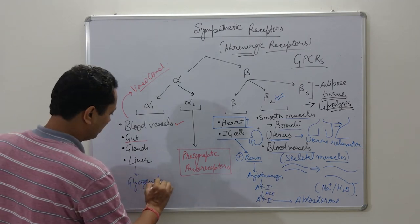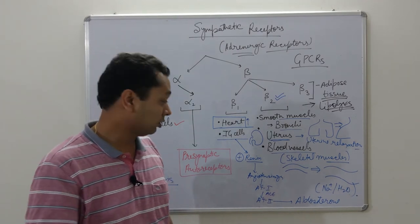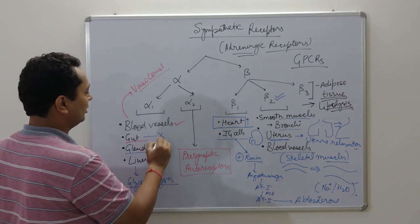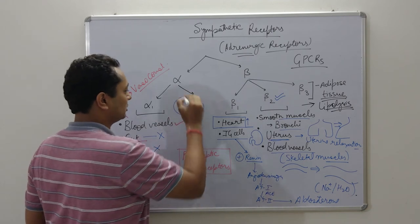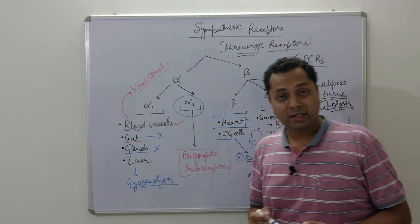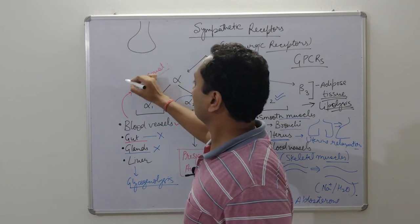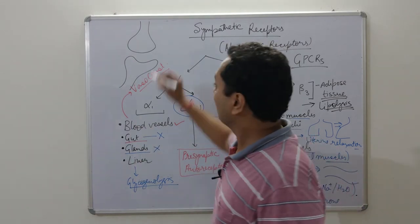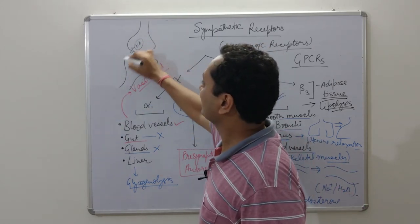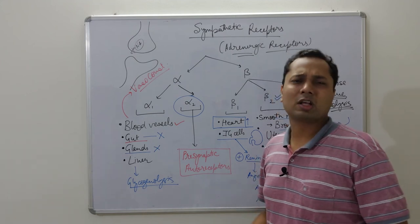Alpha-1 receptors will cause vasoconstriction of blood vessels, reduce glandular secretions, and the liver will perform glycogenolysis — breaking down glycogen to release glucose — because the body requires more glucose under stress. The gut will also be relaxed. Alpha-2 receptors are pre-synaptic auto receptors. Every process in the body requires control, and in this neuron model, when noradrenaline is released, there must come a point where that release is inhibited.